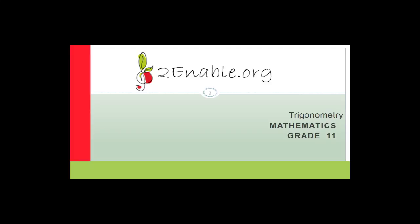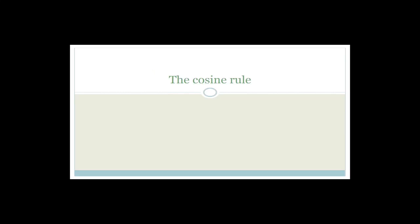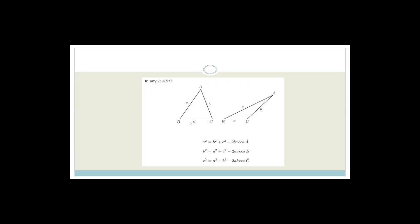In this lesson, what we're going to do is carry on with the cosine rule. We're going to prove it, use it to solve some examples, then we're going to do the area rule, and then we're going to do some mixed examples. So let's get started straight away.